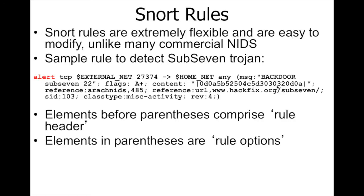This section is the header and this section is called the options. The alert action is defined in the header; the protocol used is TCP; this is the environment variable external_net; this is the port number; another environment variable is home_net; the destination port is 'any'; and the options specify that the TCP flag is A.